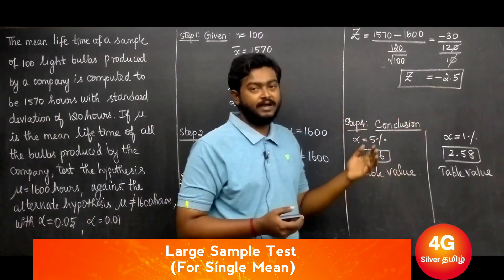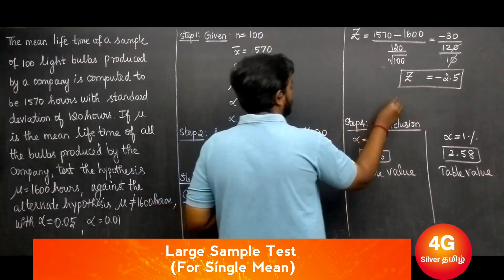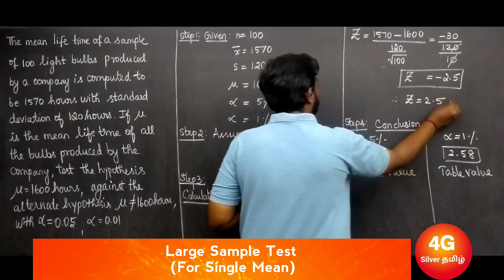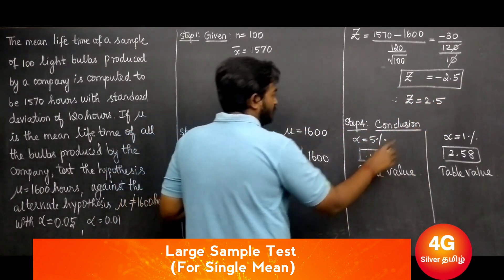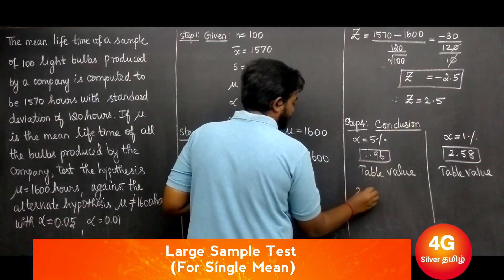The calculated z value is minus 2.5. The absolute value is 2.5, which is greater than 1.96.